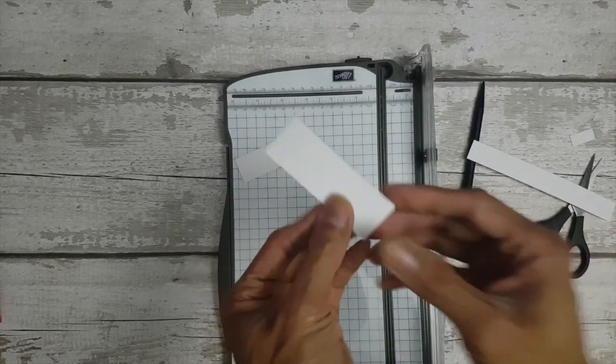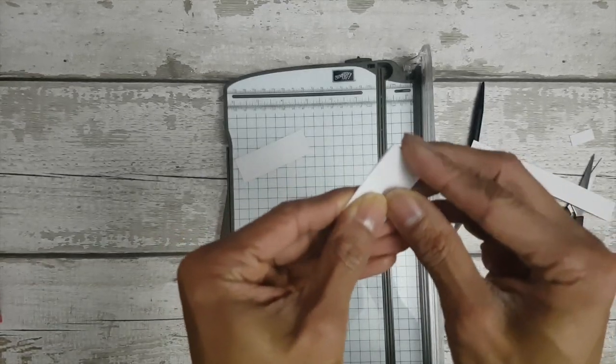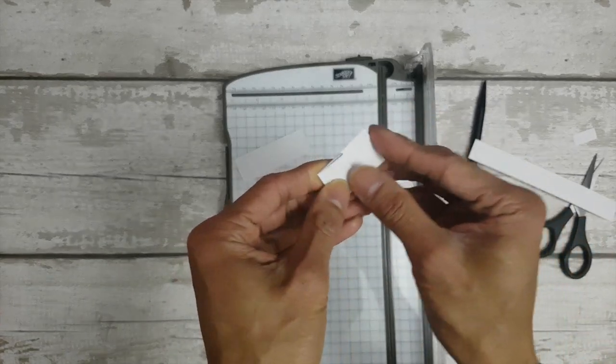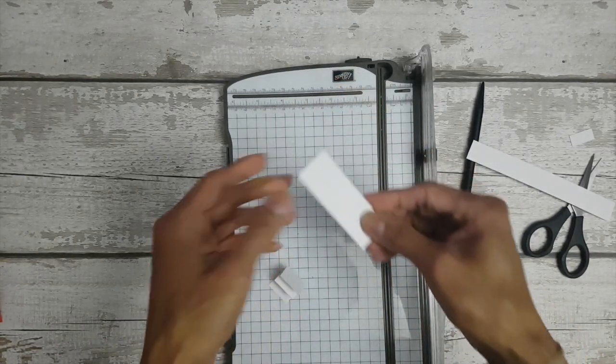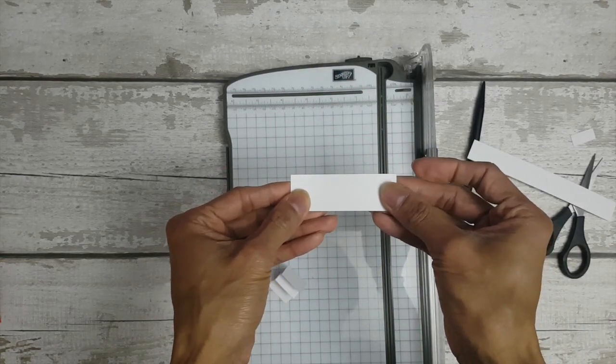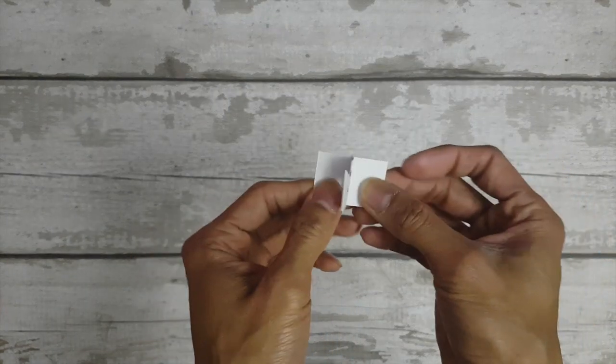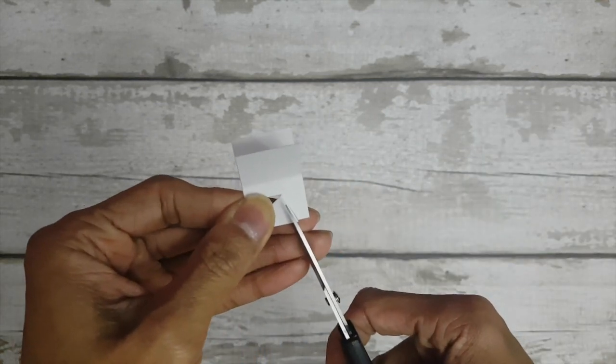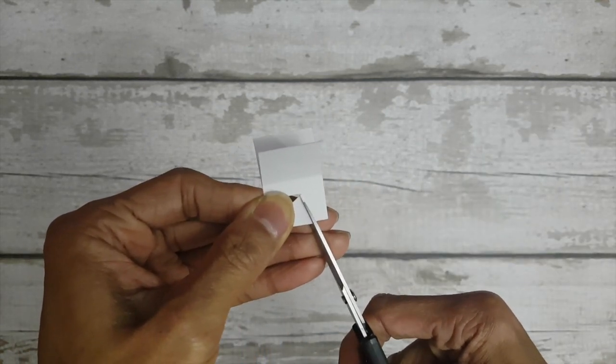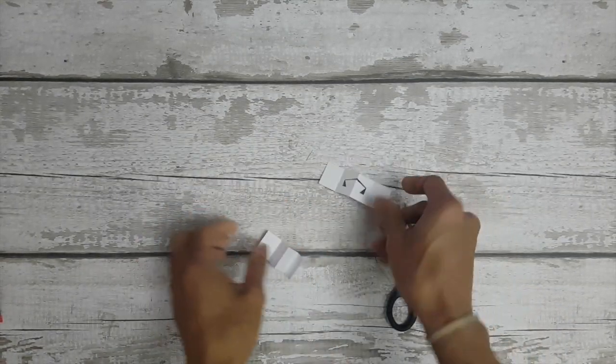So fold it in half first and then the tabs one towards you and one away from you and then I'll just do the same for the other one. So I've gone ahead and cut one of the tabs for the rubber band holder. I will be showing you how to do that again if you haven't seen our previous version of the hexagonal jumping pop-up card. So for your next one just fold it in half.